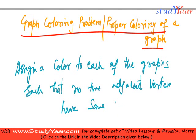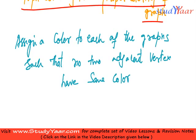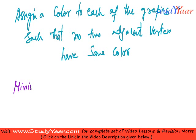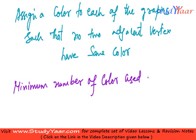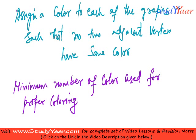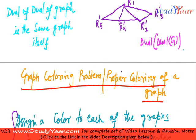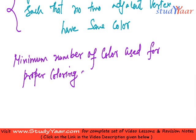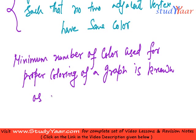The minimum number of colors that we use in this case is known as the chromatic number of the graph. Minimum number of colors used for proper coloring of a graph is known as the chromatic number of the graph, and we denote it by chi (χ).